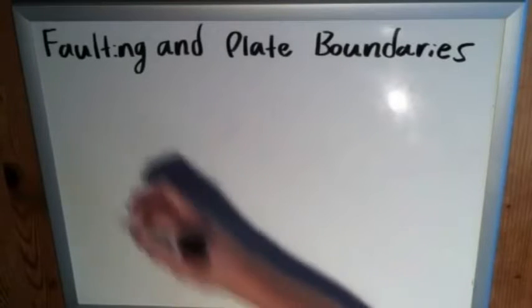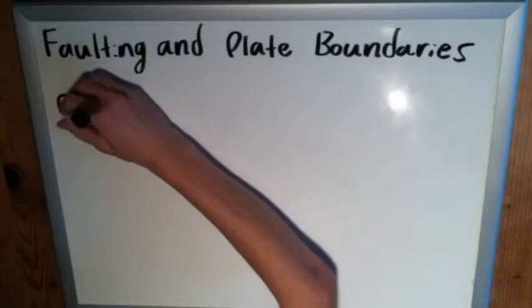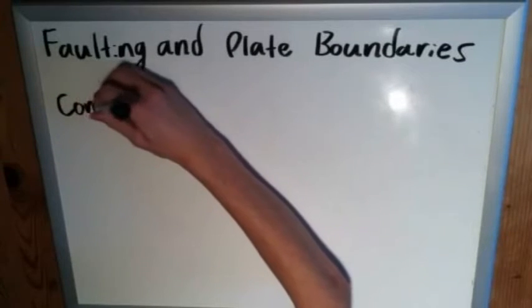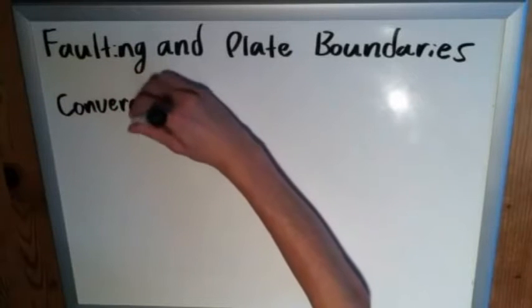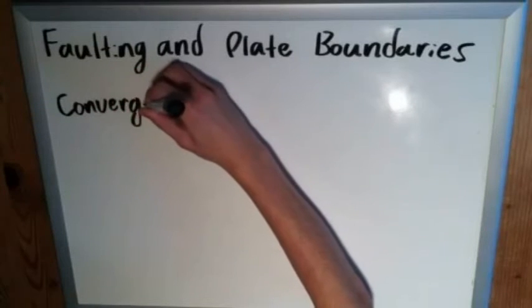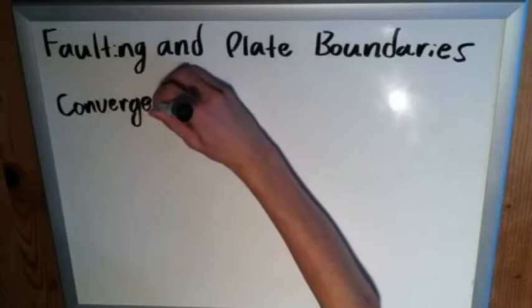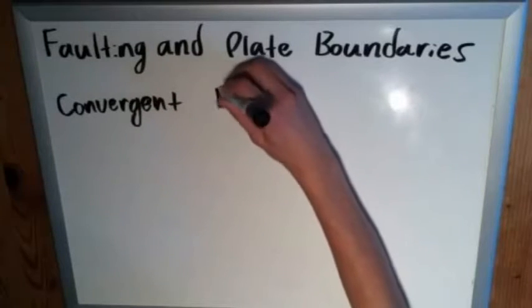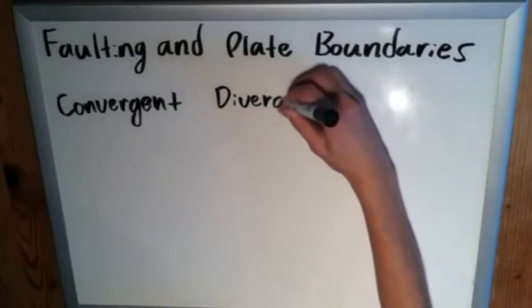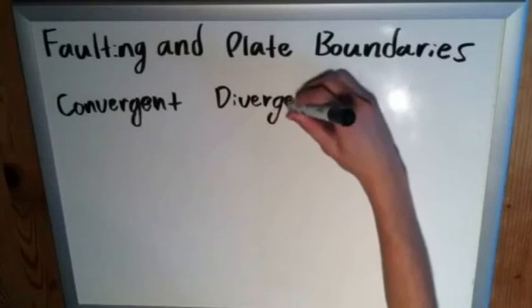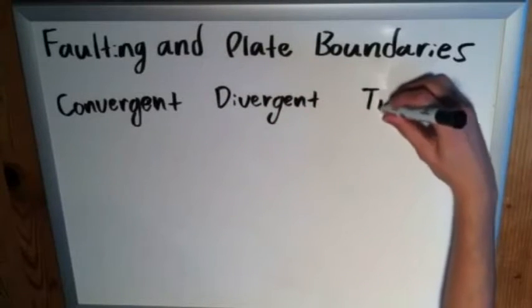A brief review: plate boundaries are where Earth's tectonic plates interact. We've got convergent, divergent, and transform boundaries.